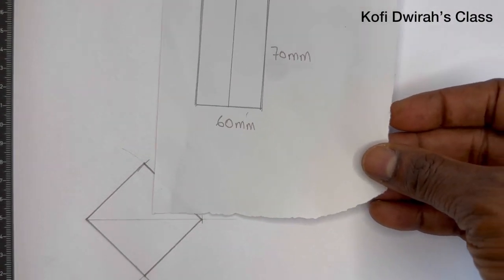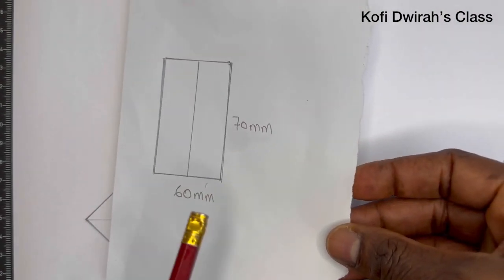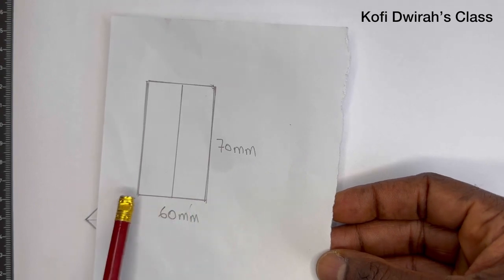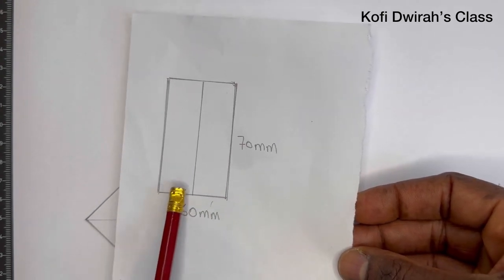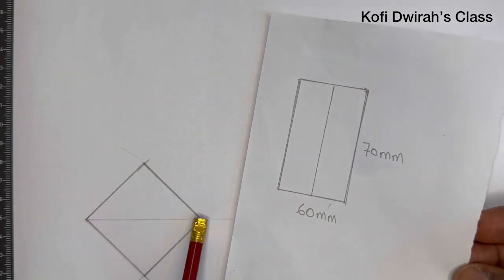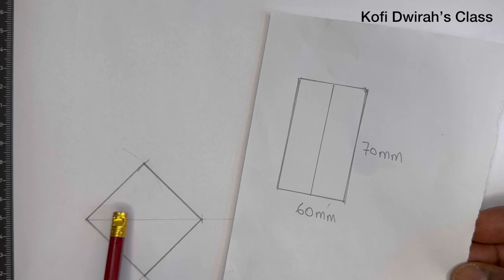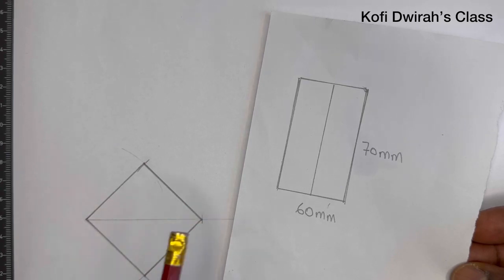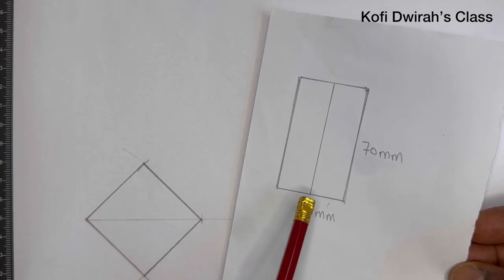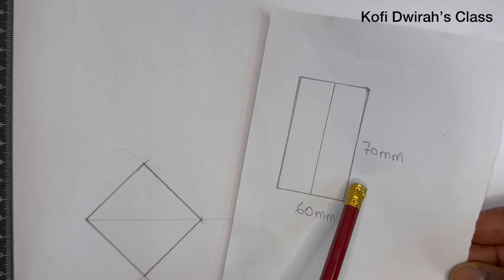Now when you look at the front view, the distance from here to this side is 60 millimeters, so we have our 60 millimeters done. The height is 70 millimeters, so with your T-square and set square, just extend the lines.